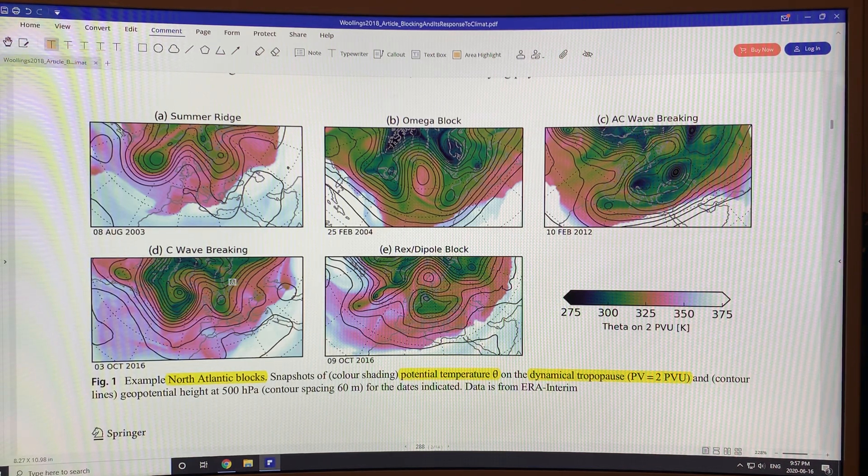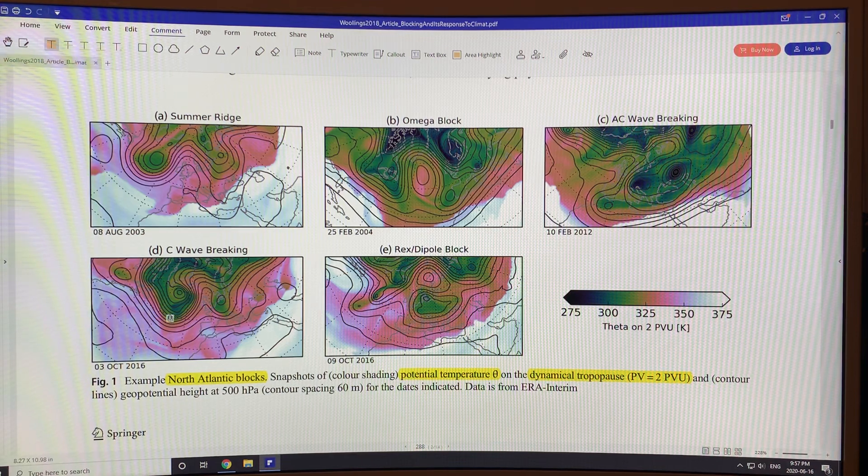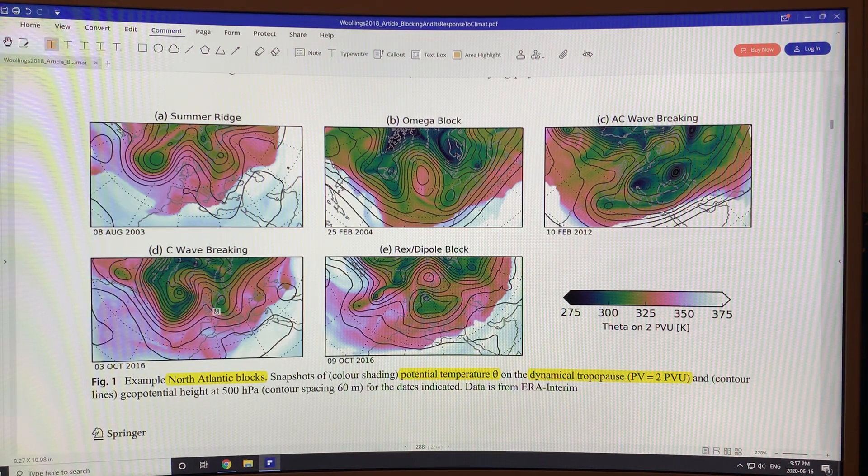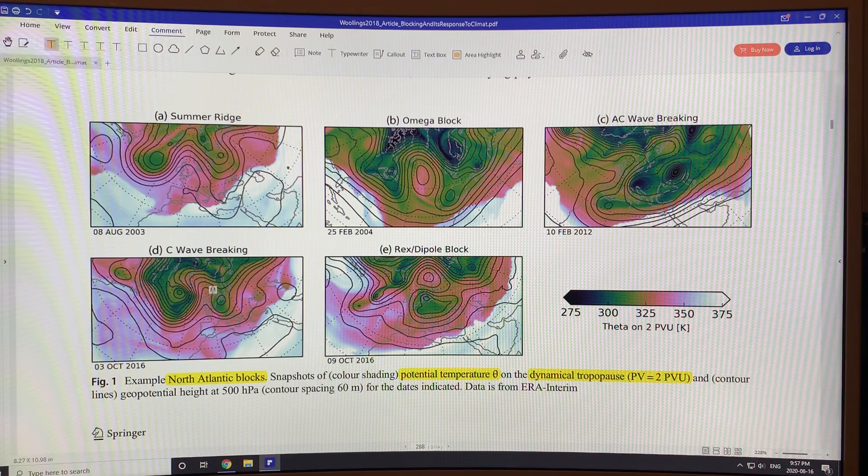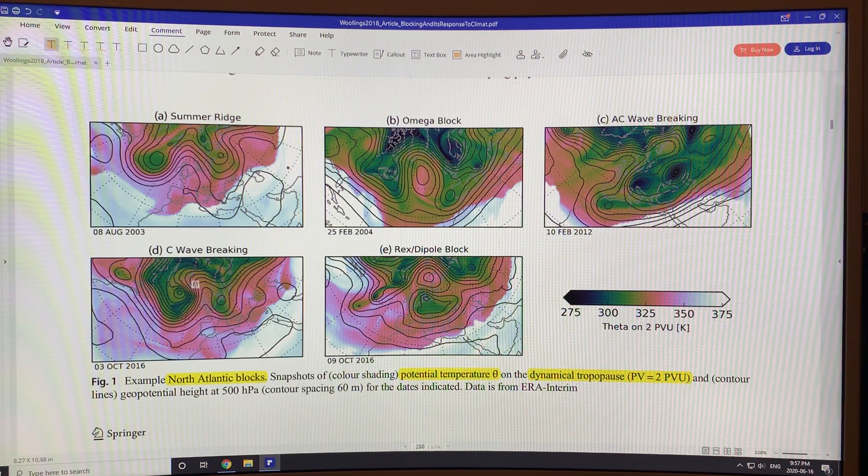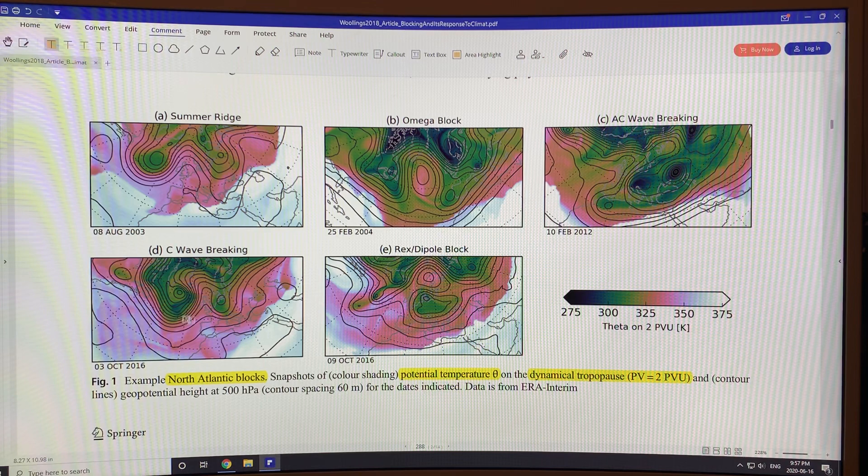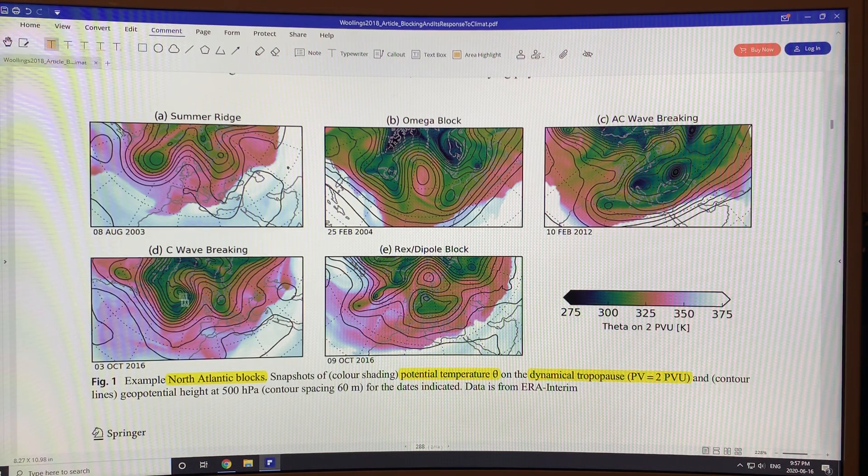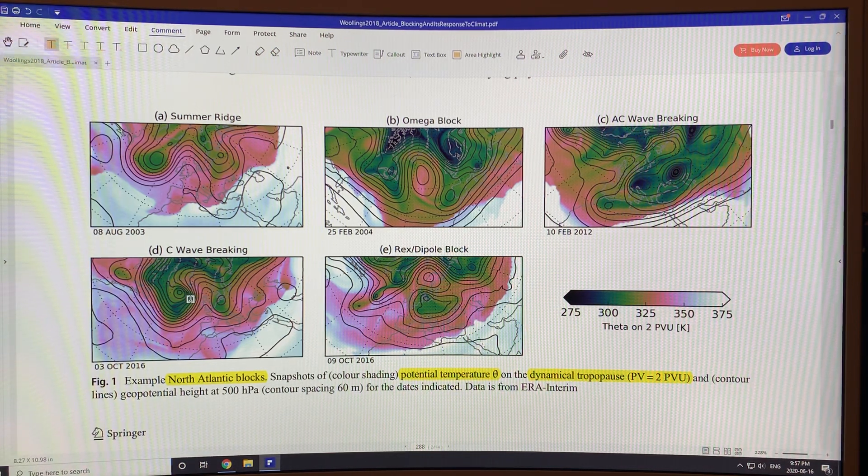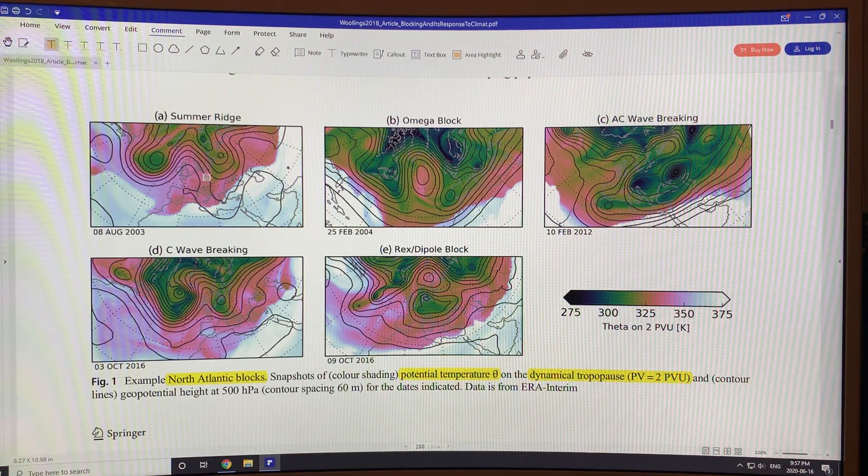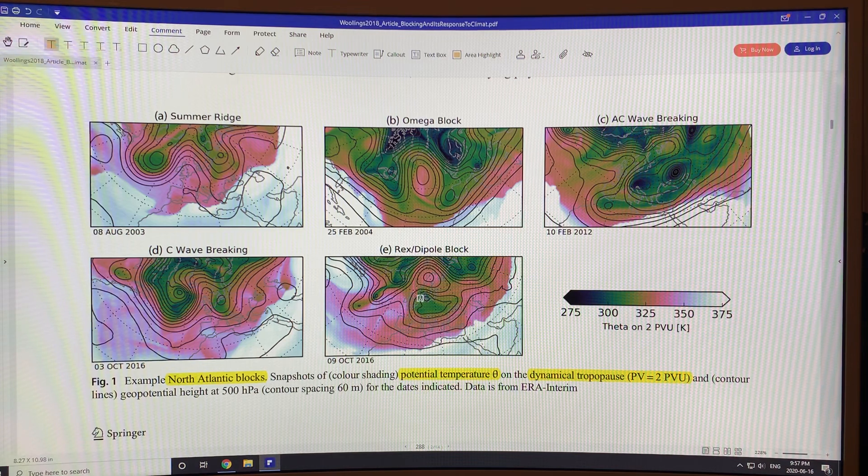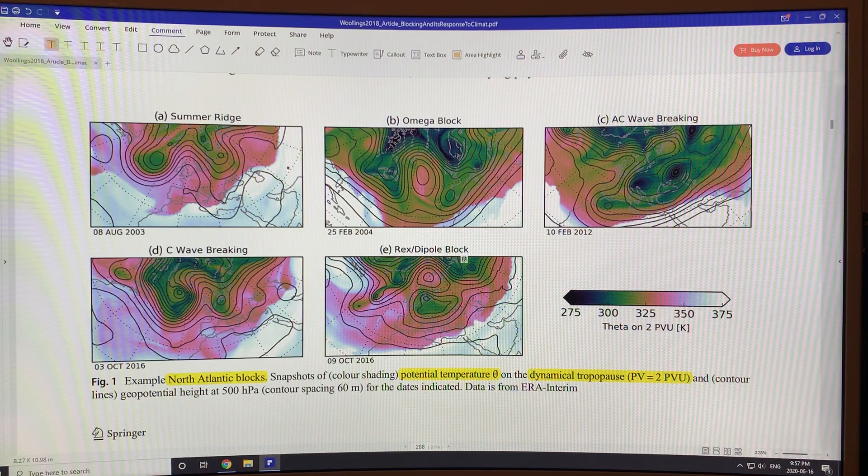If you get a cyclonic wave breaking, then this trough deepens and gets tilted and this trough diminishes and you get the ridge up here. So this is cyclonic wave breaking blocking situation. And then if you get the development of a low pressure area down here, you have the so-called Rex or dipole block.